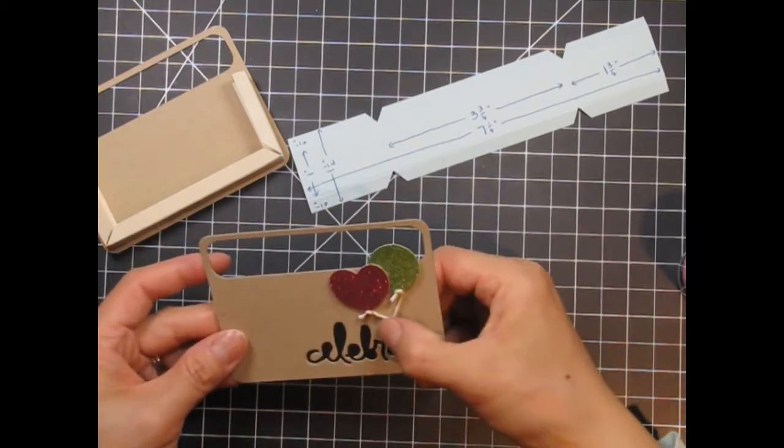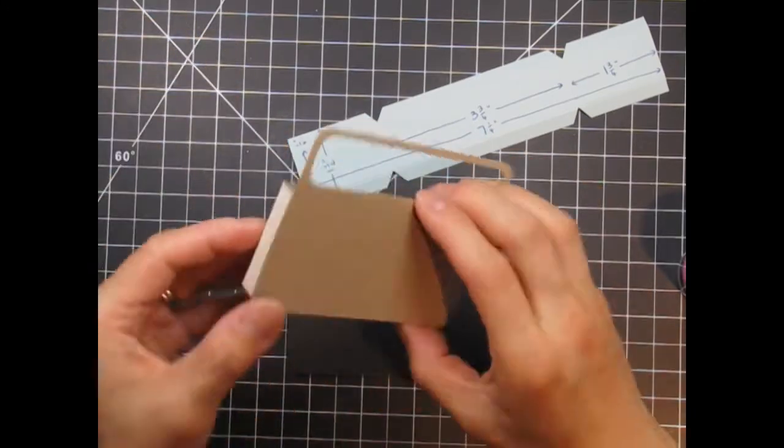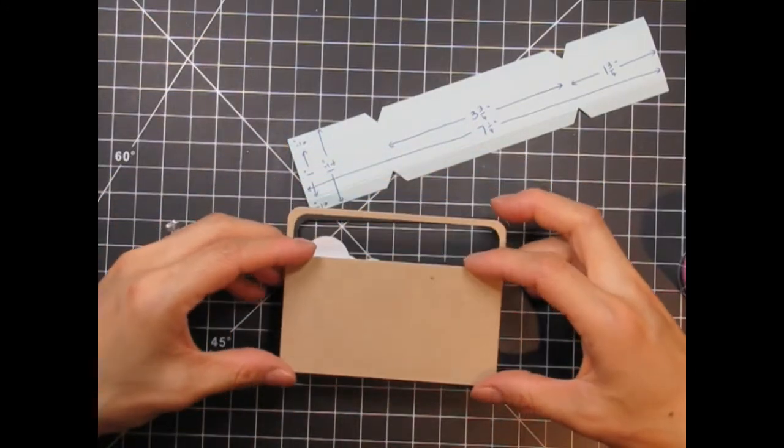Once that's all done I can assemble the box making sure that all the sides are parallel before pressing down on the score tape.